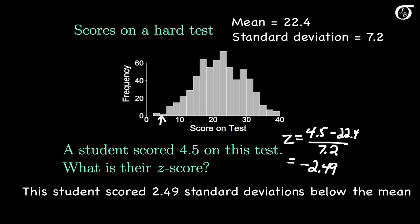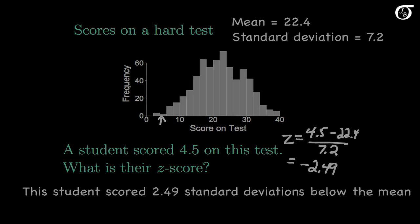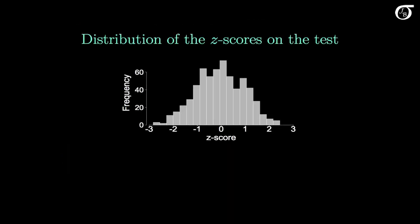Every observation has a z-score associated with it. If we calculated the z-score for every observation and plotted it, we'd see that the distribution looks exactly like the raw data, except it's scaled differently on the x-axis. Here's the distribution of z-scores — it looks exactly like the distribution of the raw test scores. The shape hasn't changed at all, but the z-scores have a mean of exactly 0 and a standard deviation of exactly 1.